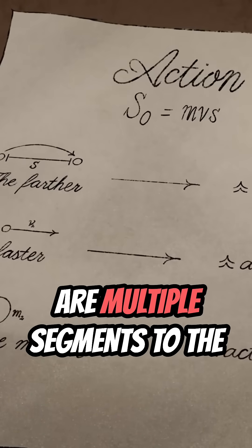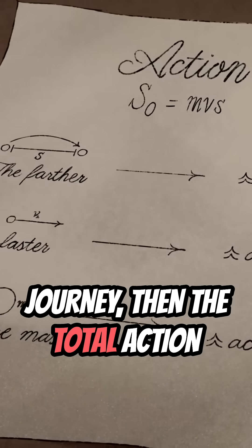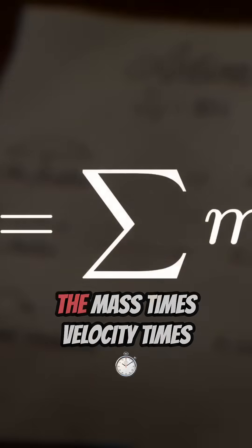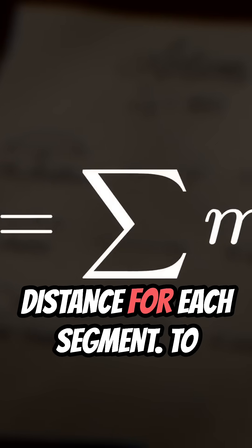If there are multiple segments to the journey, then the total action is just the sum of the mass times velocity times distance for each segment.